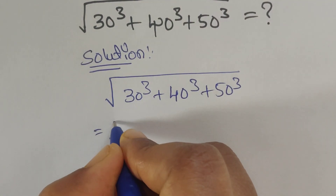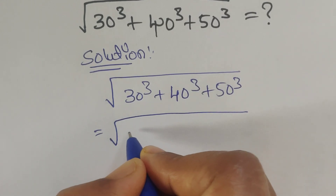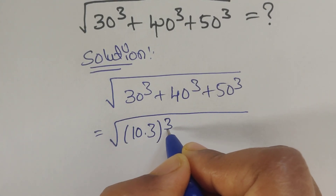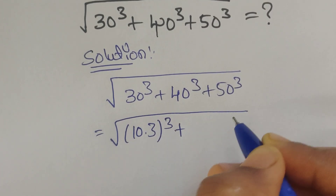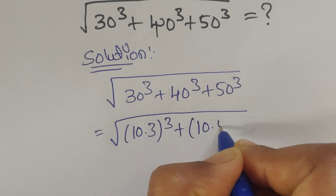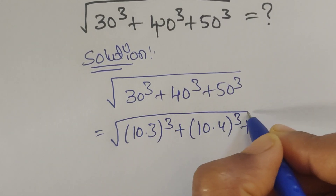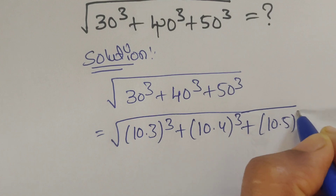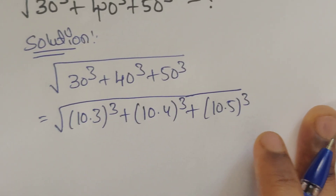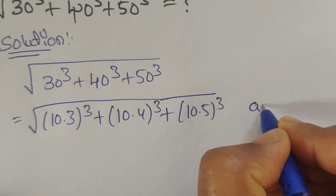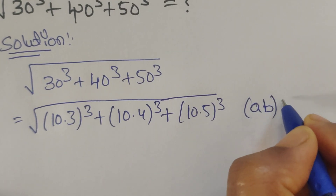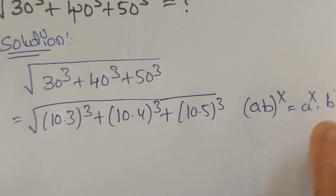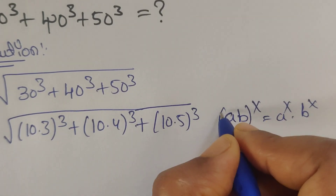We have the square root of 30³ + 40³ + 50³. We can write 30 as (10×3), 40 as (10×4), and 50 as (10×5), each raised to the power of 3. We apply the formula (a×b)^x = a^x × b^x to each term.